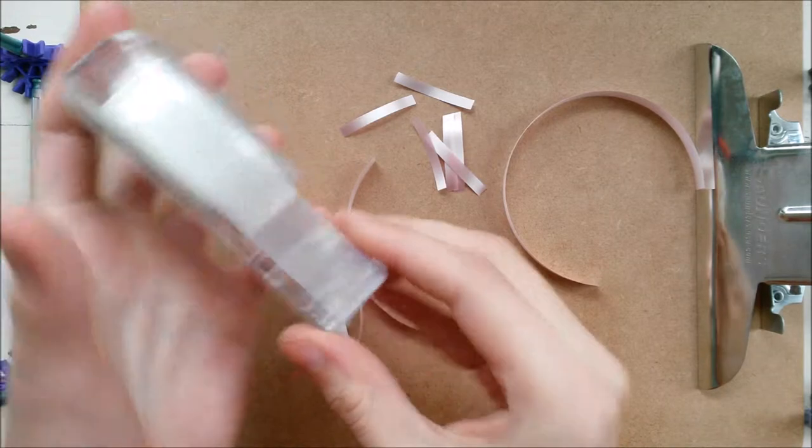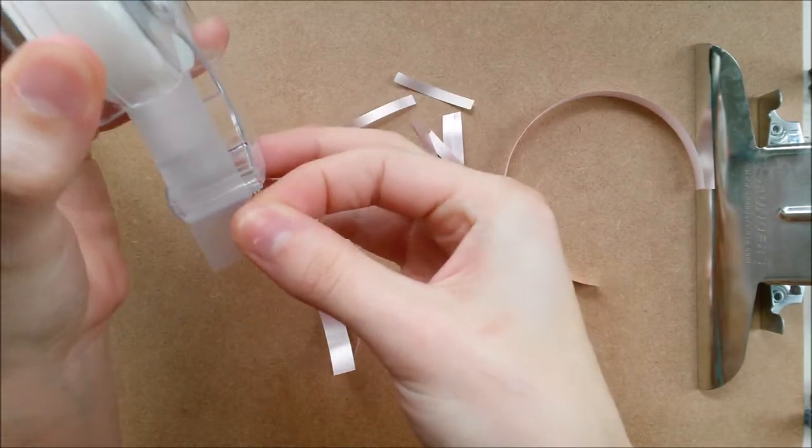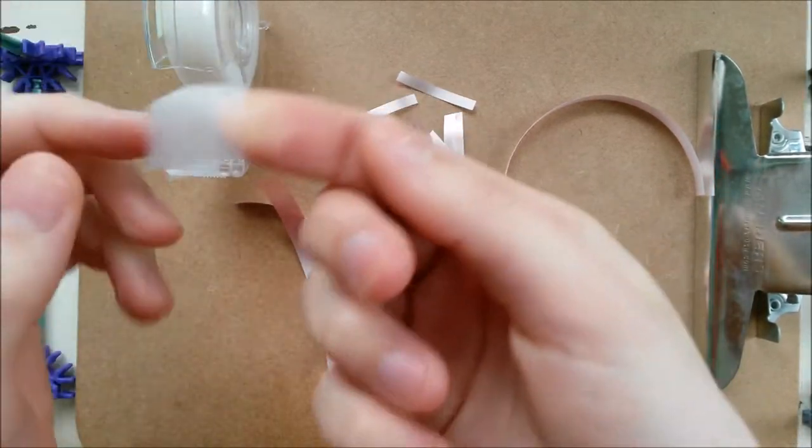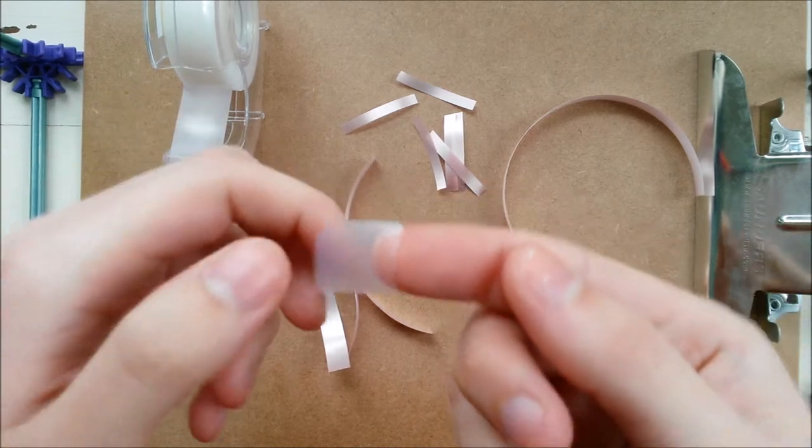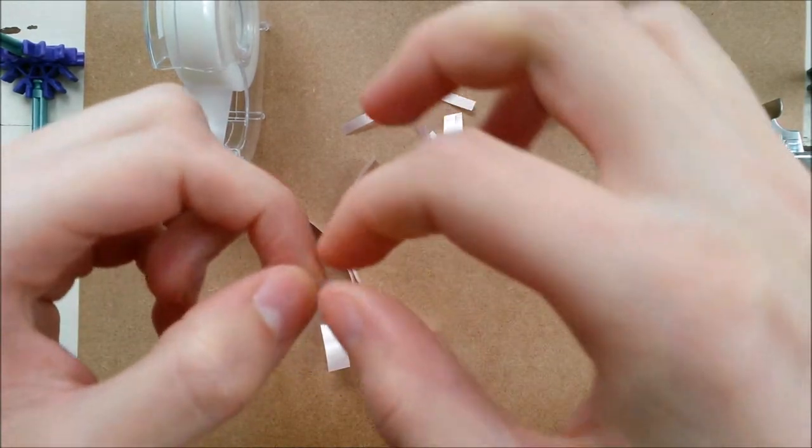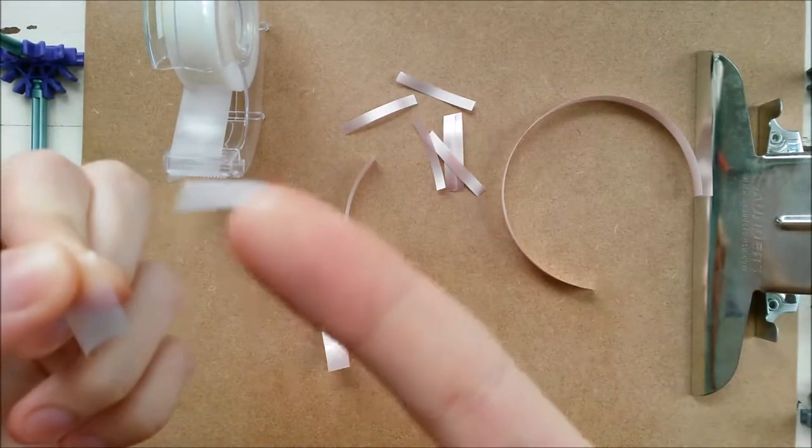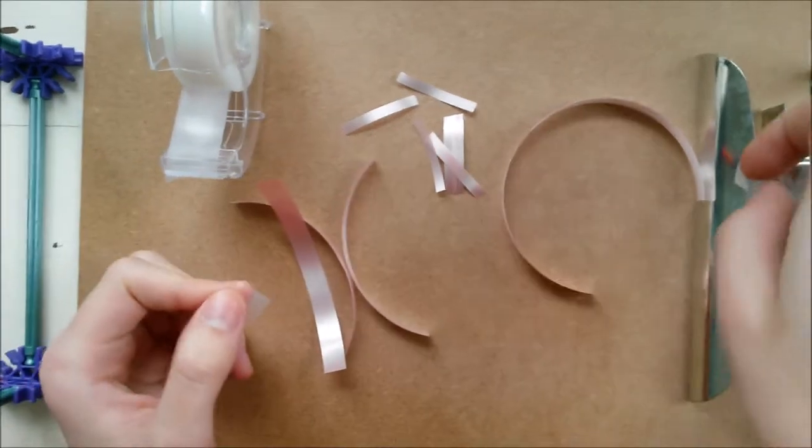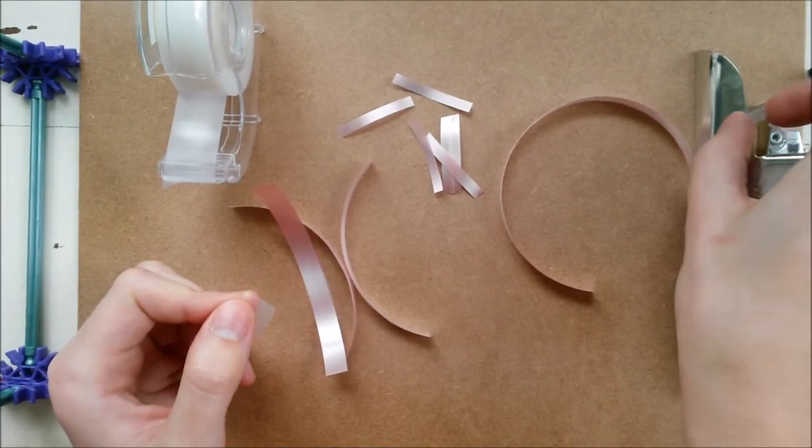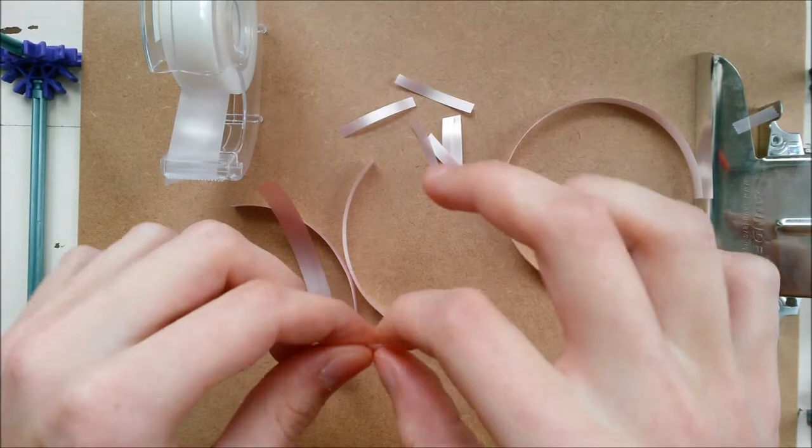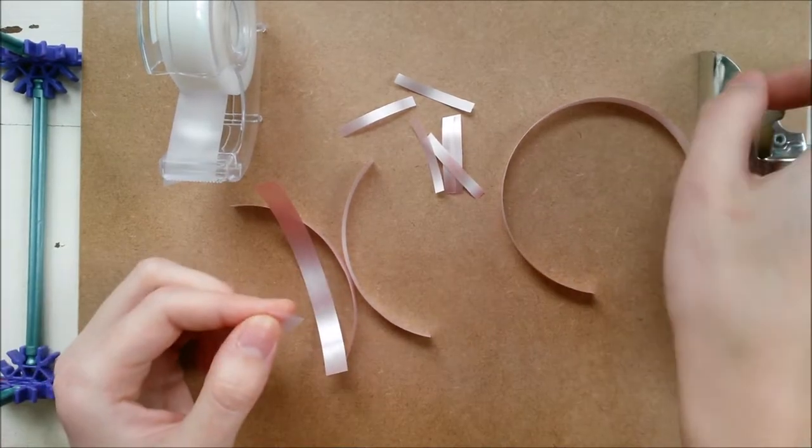So now we're going to tape it all together. You get a piece of tape, and you see how there are these ridges on the top and bottom? Those are actually really easy to tear along. You can just tear little pieces off. So I tear it up and do like three or four for each piece of tape I get.